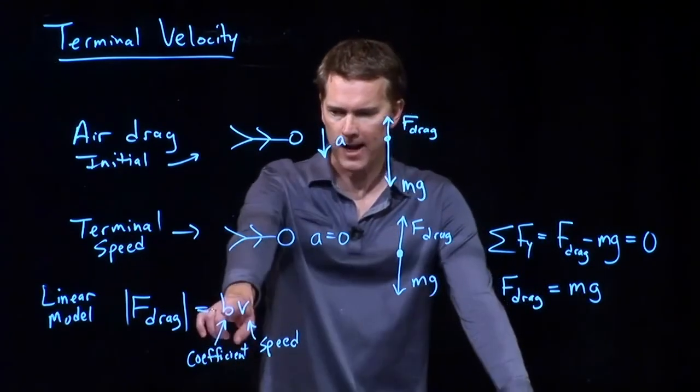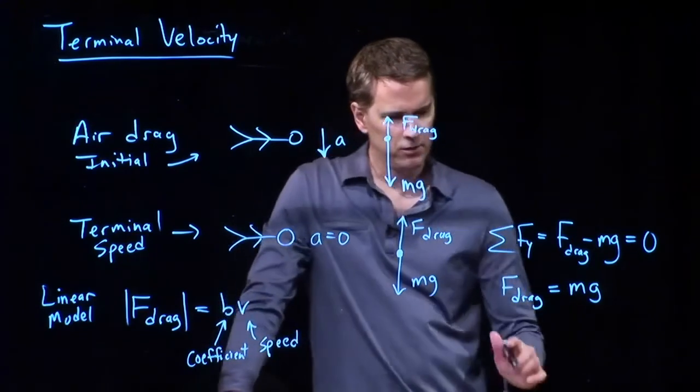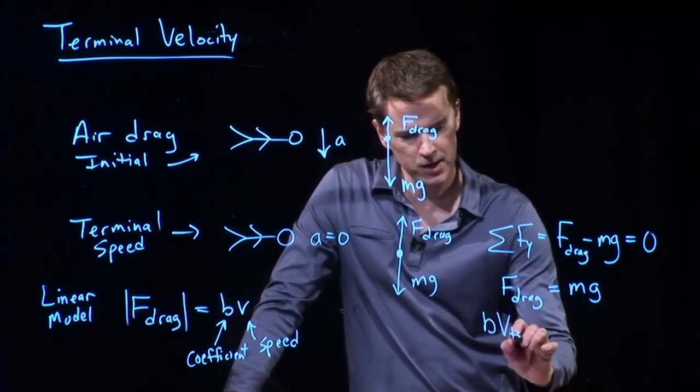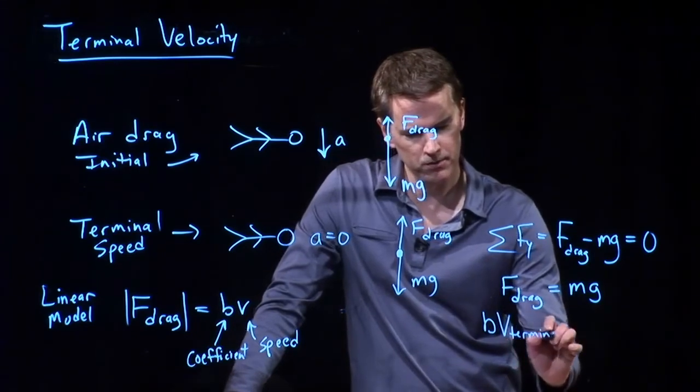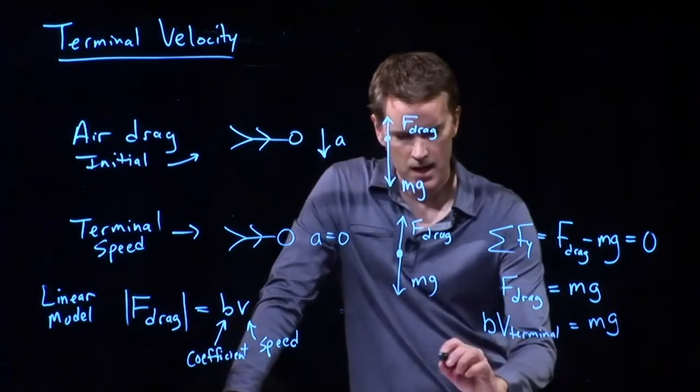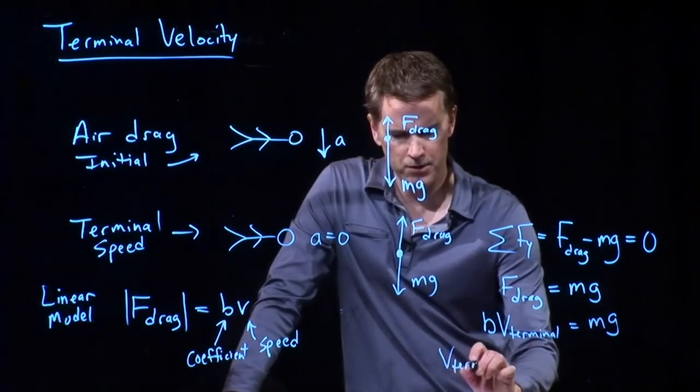All right. But F drag, we know, is this. So, in fact, I can write the following. B times V terminal is equal to mg, and so I can solve this for the terminal speed. It's just mg divided by B.